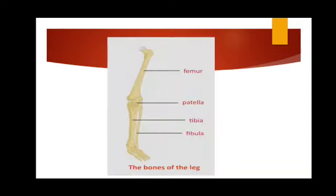Now we will move on to the bones of the leg. Each leg includes the upper leg or thigh, the lower leg, ankle, and foot. The thigh contains the femur, and the lower leg contains the tibia and the fibula. The tibia is also known as the shin bone and the fibula is also known as the calf bone. The kneecap or patella is found over the knee.